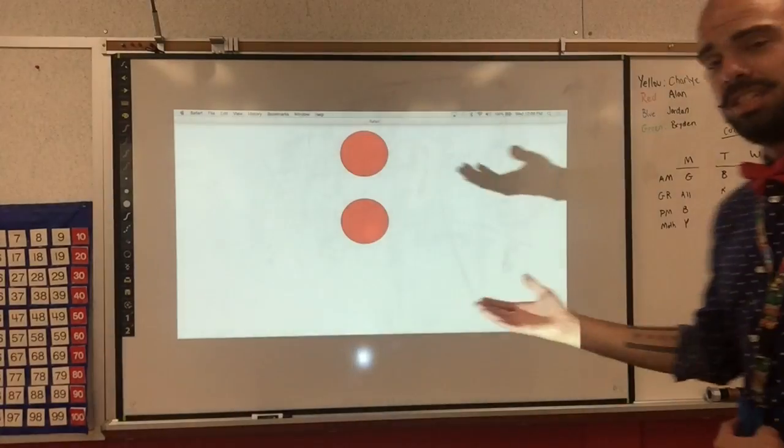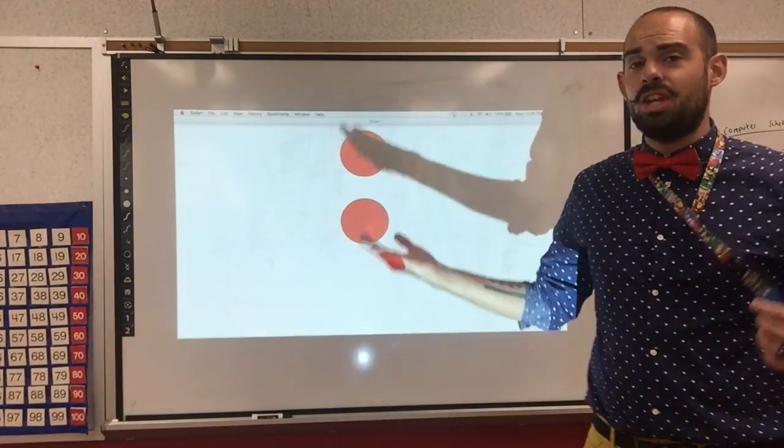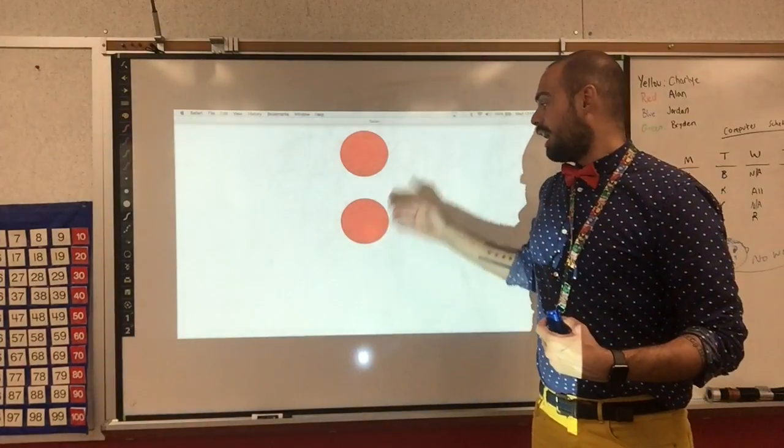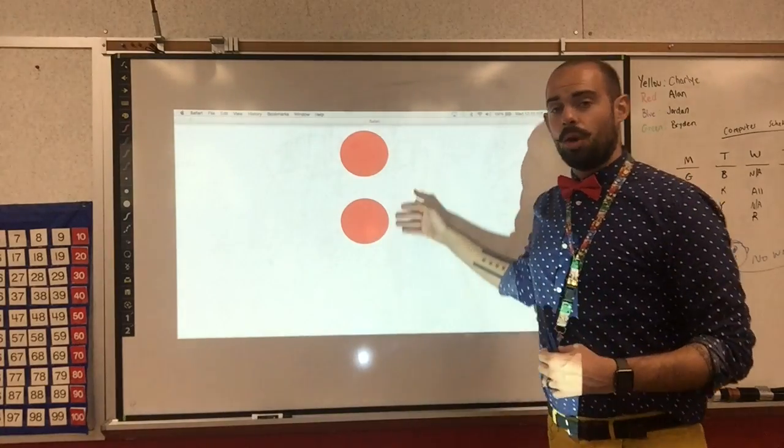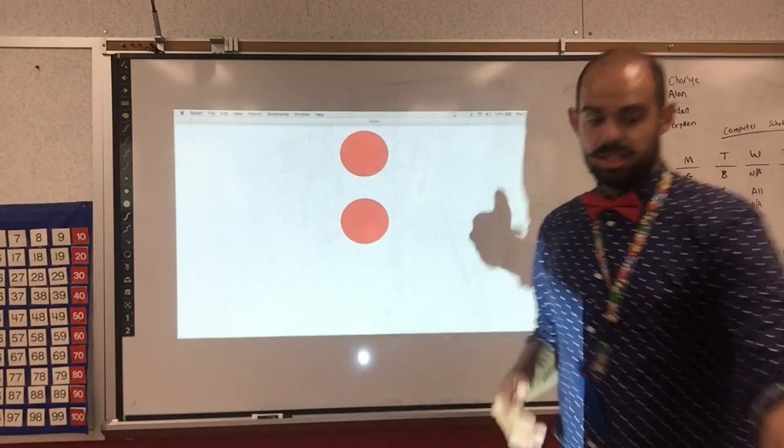And the next slide, one disappears. Same conversation. It's two. How do you know it's two? Tell me. Explain your thinking. I know it's two because there was three and one went away. Or you can say, because I see one and one more. You continue on.